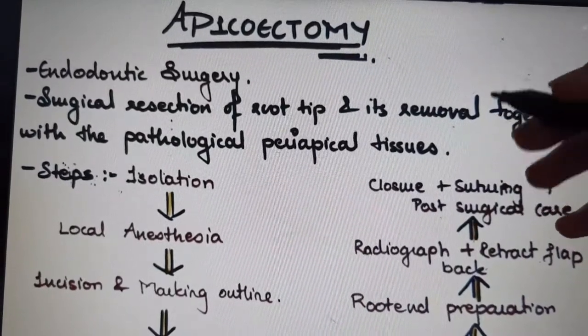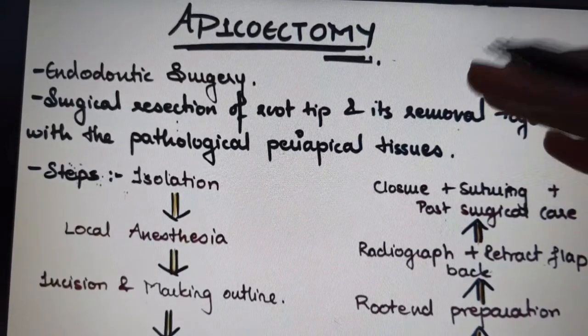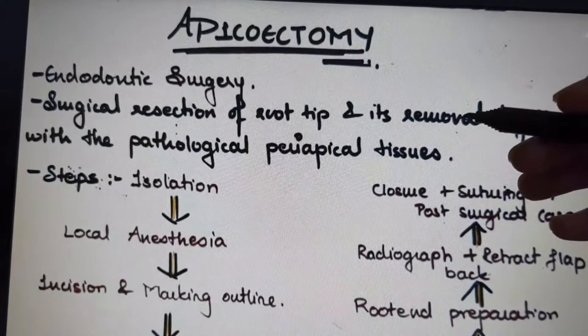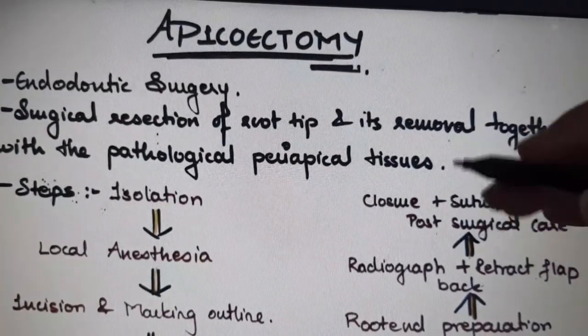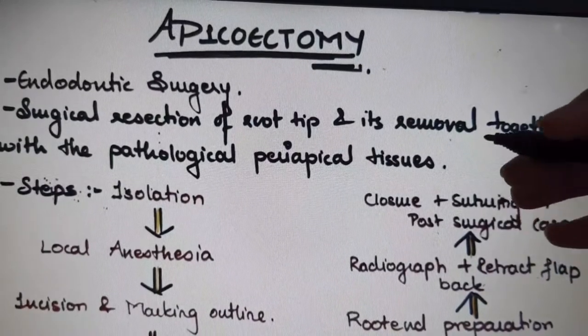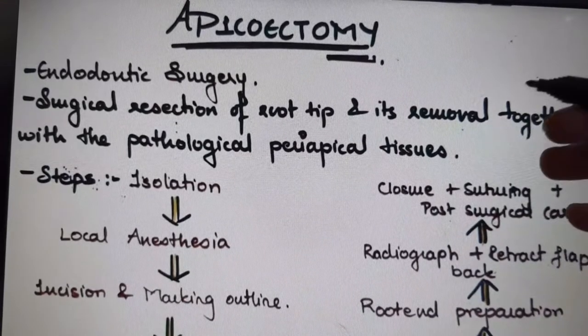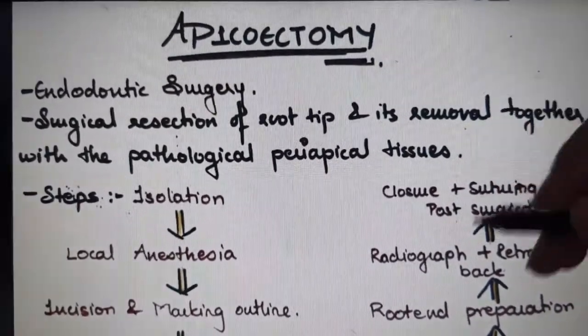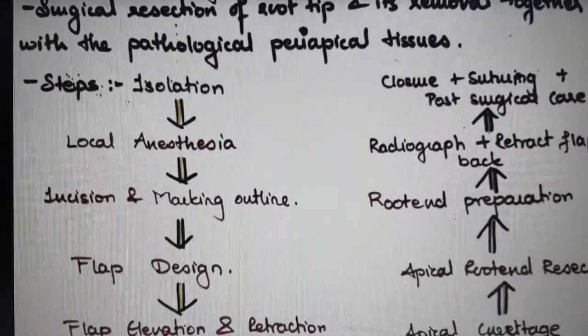There are very few absolute contraindications for endodontic microsurgeries like apexectomy. Contraindications include inadequate periodontal support, poor restorability, and any systemic complications present in the patient such as bleeding disorders or heart disease.